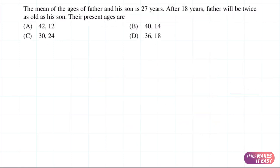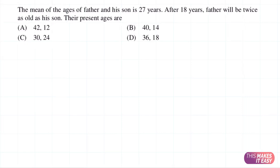Now let's look at another example. The question says that the mean of the ages of father and his son is 27 years. After 18 years, the father will be twice as old as his son. Find the present ages. There are two people — father and son — and two timelines: present and 18 years later. Let's complete the table.